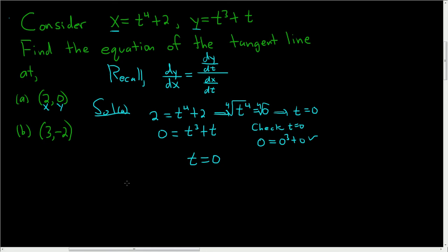That's the value of t that we'll use. Now we have to find dy/dx. So dy/dx is dy/dt over dx/dt. In this problem dy/dt is equal to 3t squared plus 1, just taking the derivative of y using the power rule. And dx/dt is 4t cubed. So dy/dx is 3t squared plus 1 divided by 4t cubed.